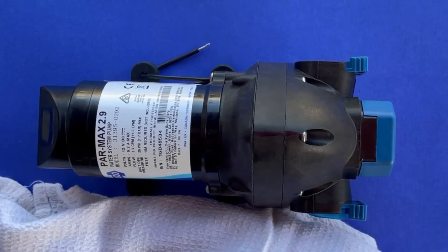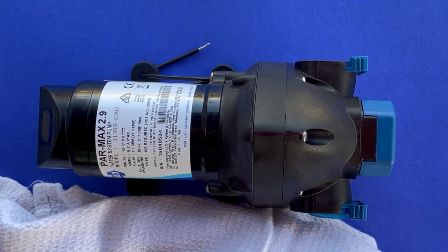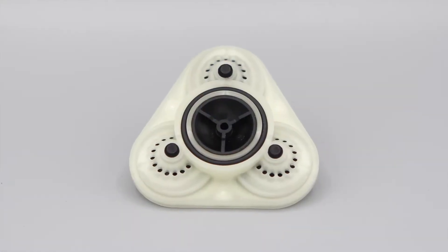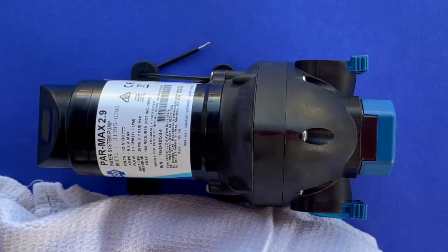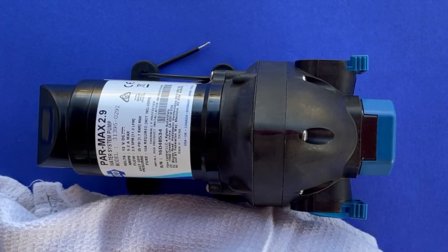A VITON replacement valve block is now available for the triplex or triangle head JAPSCO pumps such as the 2.9, model 31395, and other similar models.